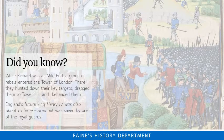Whilst Richard was at Mile End, a group of rebels entered the Tower of London — this is when they killed the Archbishop. But what is surprising is that they also apparently were going to execute the future King of England, Henry IV, who was actually saved by one of the Royal Guards.